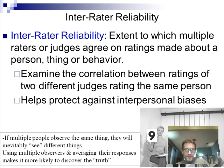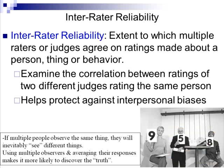Inter-rater reliability is pretty powerful. It's the extent to which multiple raters or judges agree on something. You've got maybe judges in a diving competition — three different observers observing the same dive — and they're coming up with quite different scores. So inter-rater reliability is not test-retest; in a single occurrence, do multiple people observe the same thing the same way?